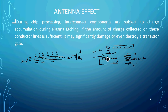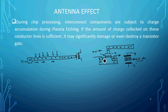Why are source and drain terminals not affected by antenna effect? Because there is no oxide layer present beneath the source terminal or drain terminal — only the gate has the oxide layer. Since there is no oxide layer under source and drain, those terminals are not damaged during antenna effect.